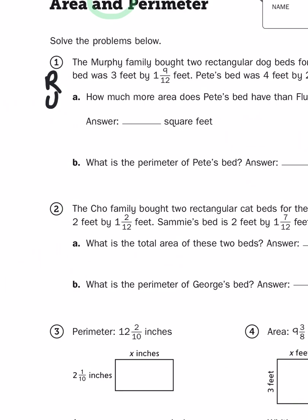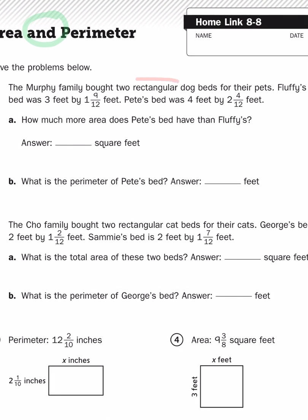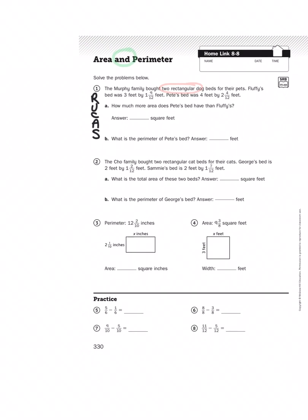I'm going to re-read the problem, underline the question, circle the important information, come up with an action plan, and then solve it. So there are two rectangular dog beds. Fluffy's bed is 3 feet by 1 and 9 twelfths. Pete's bed is 4 feet by 2 and 4 twelfths.